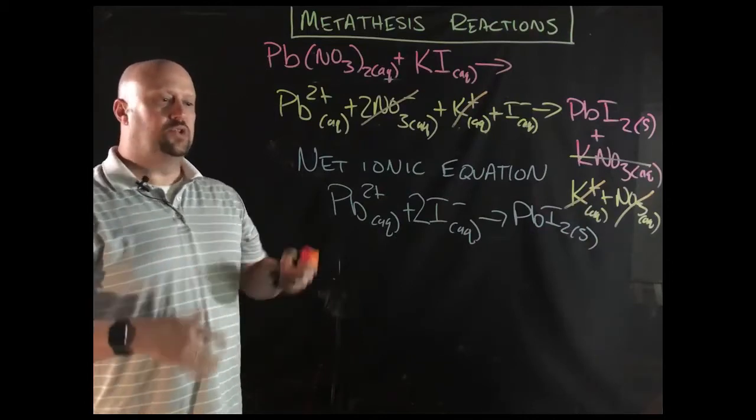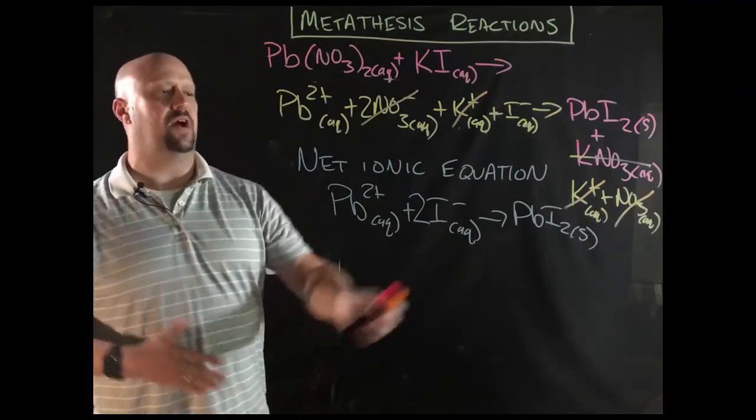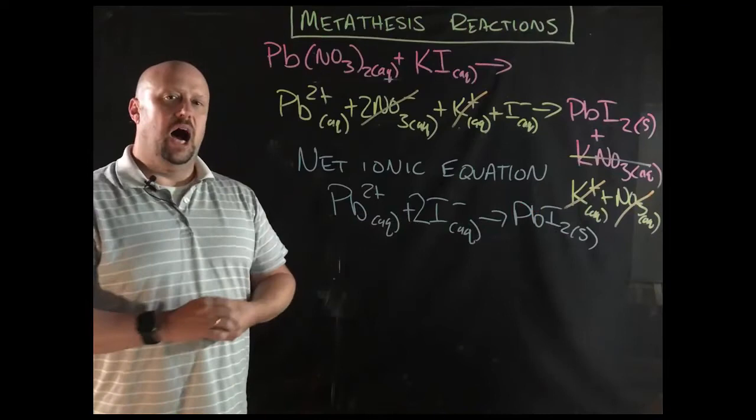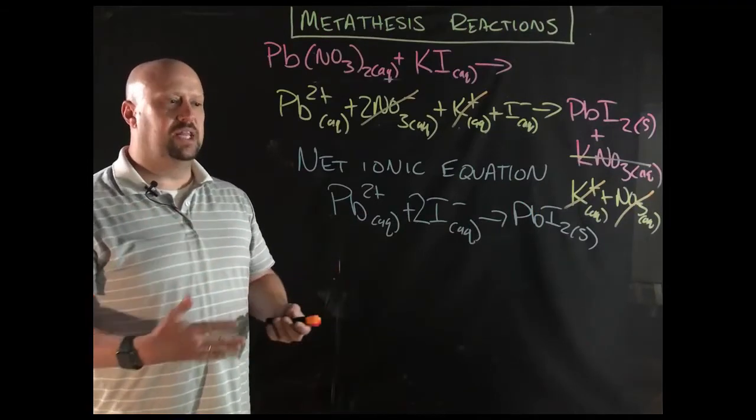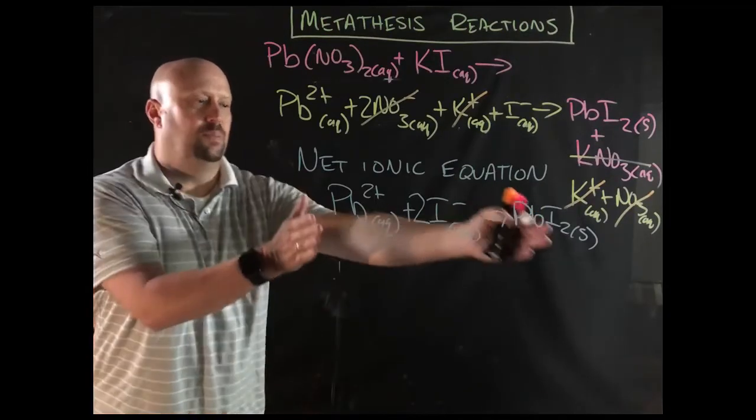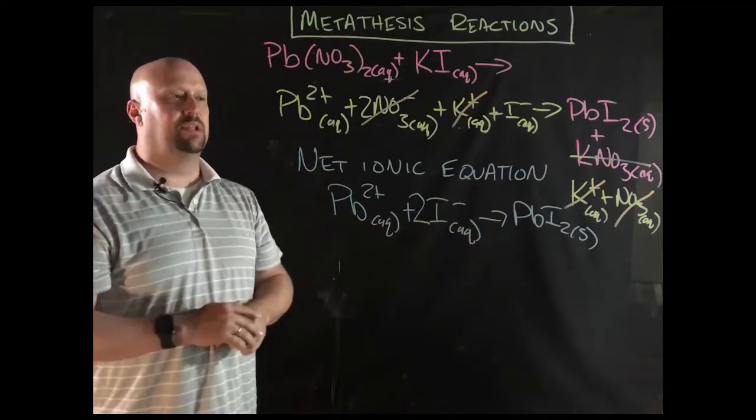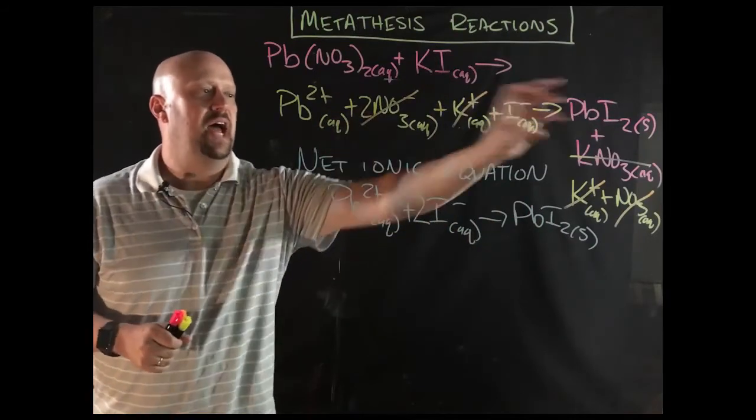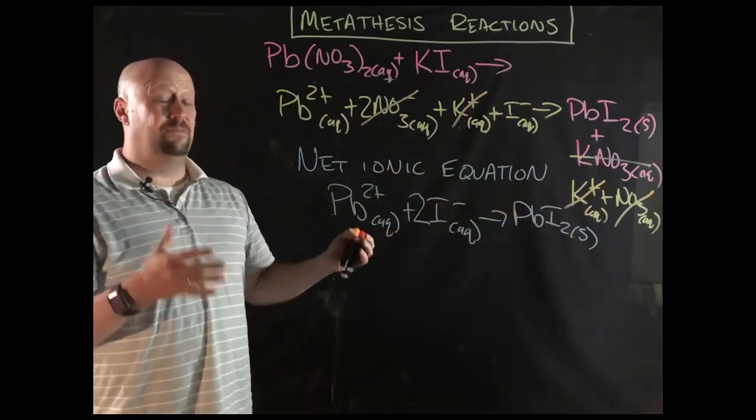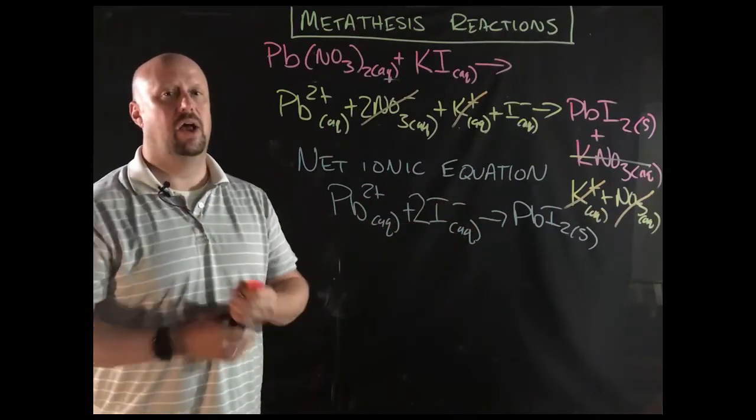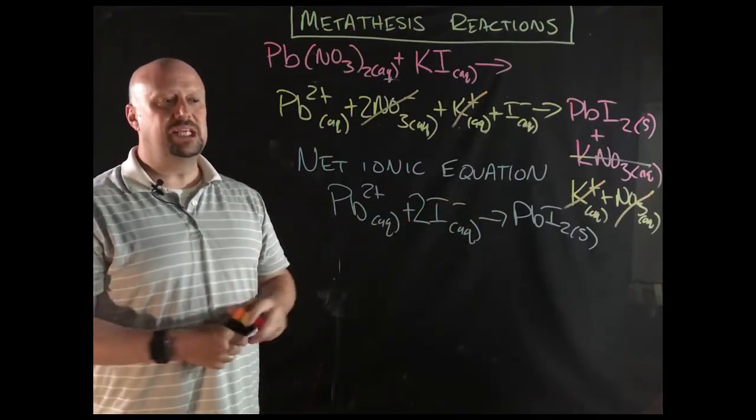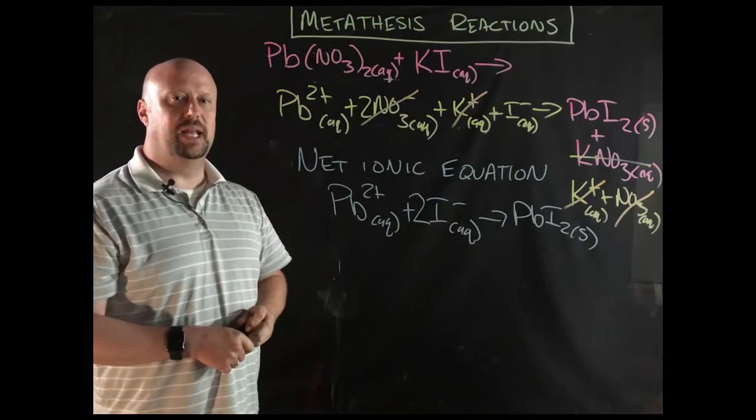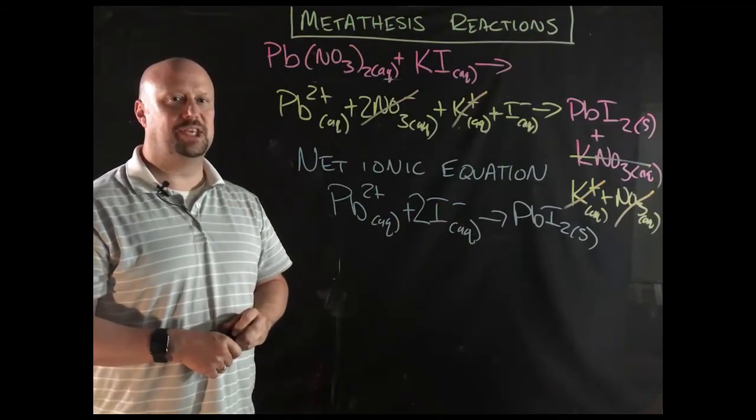So if we had to then do some stoichiometric calculations to figure out how much of this are we going to get, if we were doing a titration or anything like that, the simplicity of this allows us to be able to do that a lot easier than having to know all of this. And in many cases, it helps your balancing out a lot more. So that's a metathesis reaction and that is how we get to a net ionic equation. Thanks, kiddos.